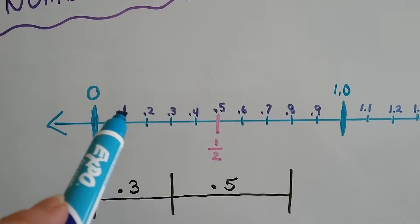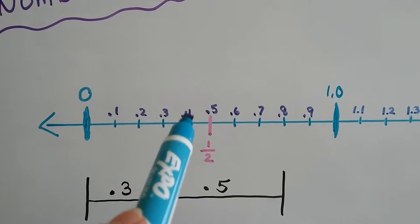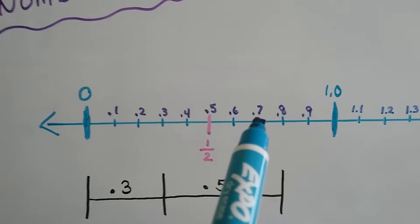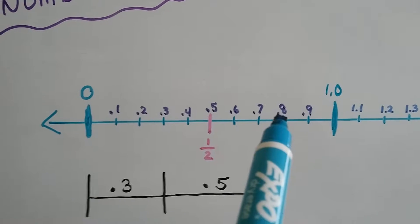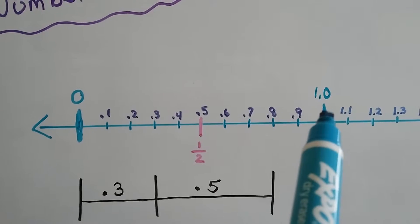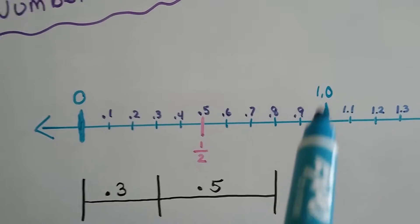So there's one tenth, two tenths, three tenths, four tenths, five tenths, six tenths, seven tenths, eight tenths, nine tenths. And ten tenths is one whole.